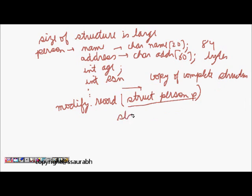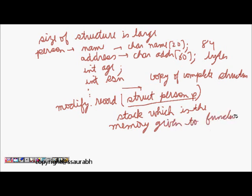Stack memory given to functions is usually very small, so instead of copying the whole structure, we should generally try to pass pointers to the structure. We should do modify record and pass the pointer to that structure - struct person star p. Now only the address of that structure will be passed and from there we can change it.